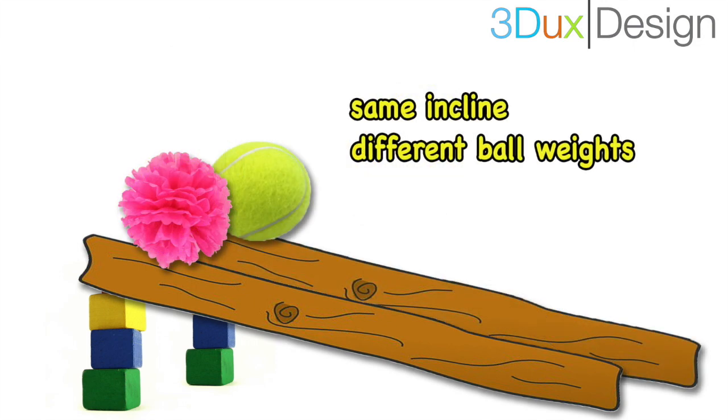Well, here's an image of a light, fluffy, soft pom-pom and a more firm tennis ball. The two ramps are exactly at the same height, or the same slope. Can you guess which ball is going to go faster? Okay, so hold that thought, because we are going to do an experiment.